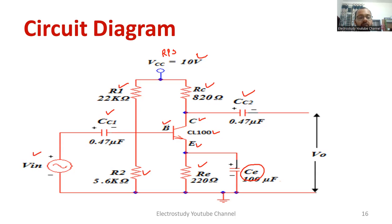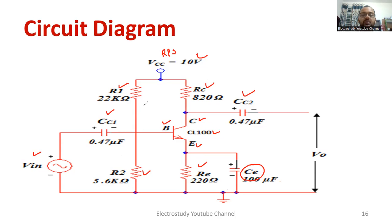First, identify the base, collector, and emitter terminals of the BJT. Then start making the connections: connect a resistor directly to the emitter, then connect a capacitor in parallel with RE — both connected to ground. Afterwards, connect the collector capacitor, then the 220 kΩ resistor, then the 5.6 kΩ resistor to complete that part of the circuit. Connect VCC, then the input coupling capacitor CC1 and output coupling capacitor CC2. Set the desired voltage and identify the input and output terminals. Also a DRB (Decade Resistor Box) is needed.